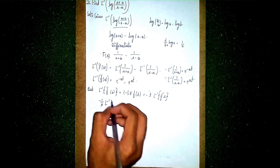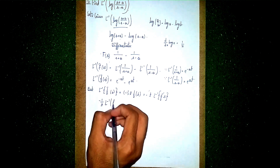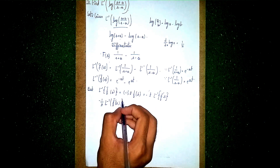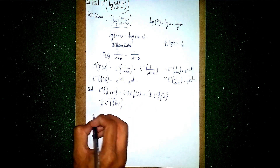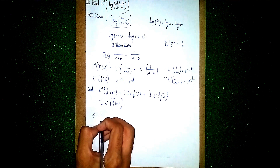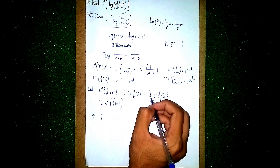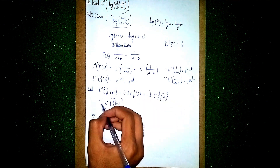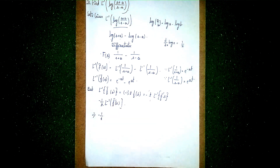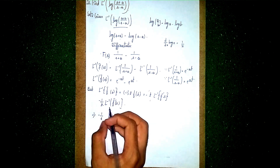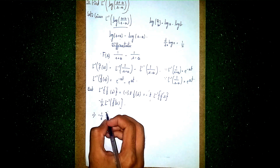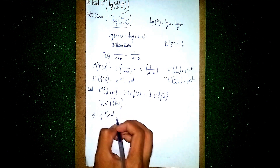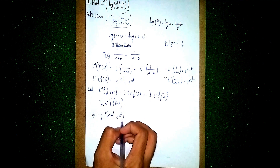Multiplying by minus 1/t: we get minus 1/t times (e^(−at) minus e^(at)). This t will combine as 1/t. So it becomes minus 1/t into (e^(−at) minus e^(at)).